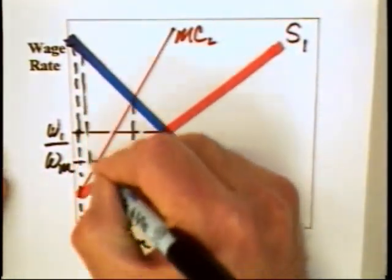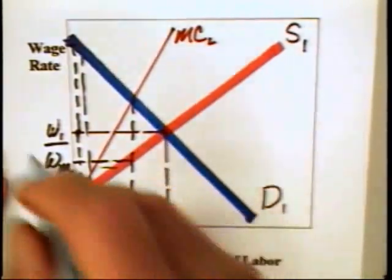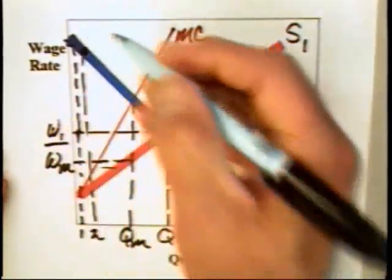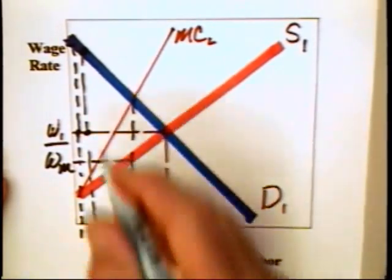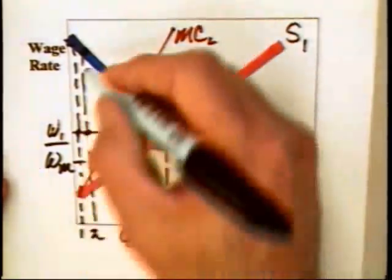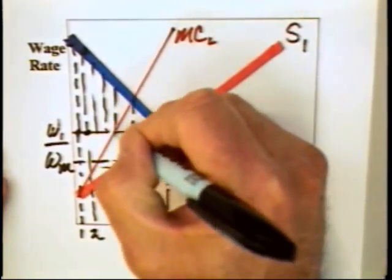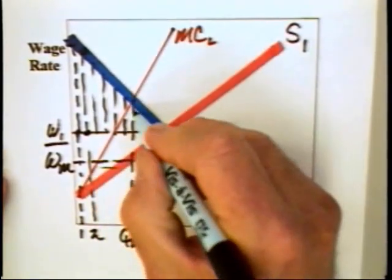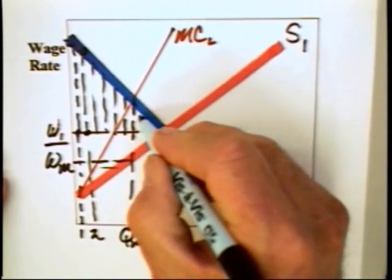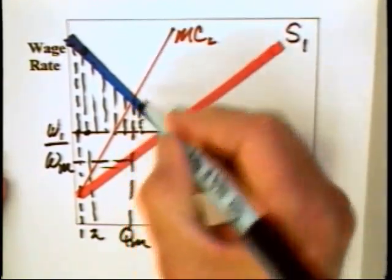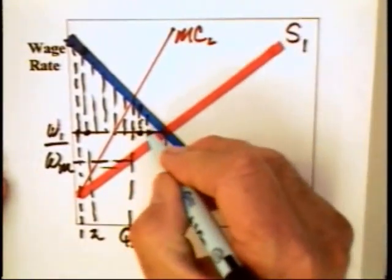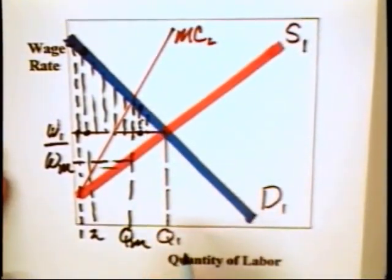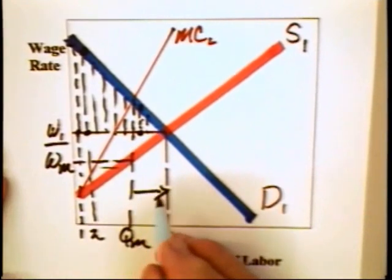What about the second worker? Well, the second worker has a marginal value up here. It has a marginal cost equal to W-1, and so the second worker will be hired. Well, since there is a gap between all of these units of labor, even beyond QM, the marginal value is greater than the wage rate. The result is that in a monopsony labor market, a minimum wage can, in fact, lead to greater employment.